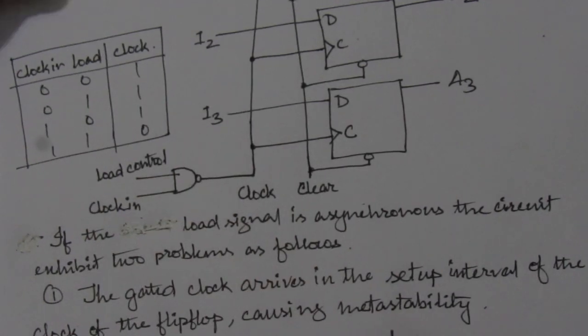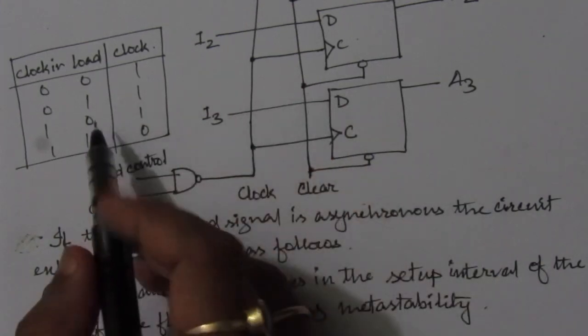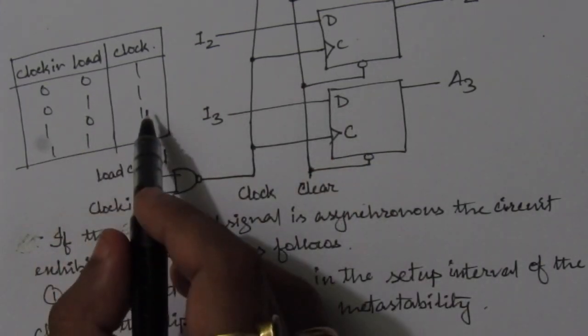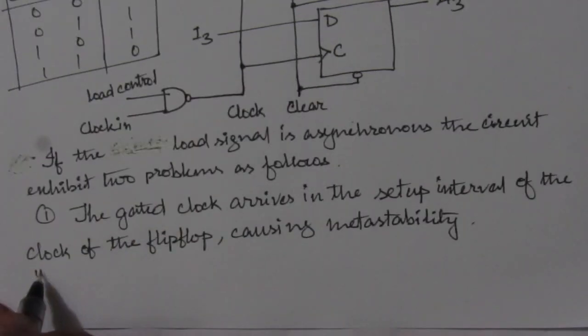So here we will have 2 states. Whenever clock input is 1, this clock should be 1. But from this truth table, we can see that we will have 2 states of the clock, that is 1 and 0. So the next problem will be,